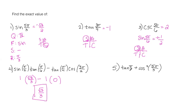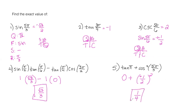For number five, tan of pi — I'll use the unit circle. At pi, y over x would be zero over negative one, so that's zero. For cosine squared of five pi over three, I find cosine of five pi over three and then square that value. Cosine of pi over three is one half, and since I'm in the fourth quadrant, cosine is positive — though it doesn't matter since I'm squaring it anyway. I end up with one fourth.